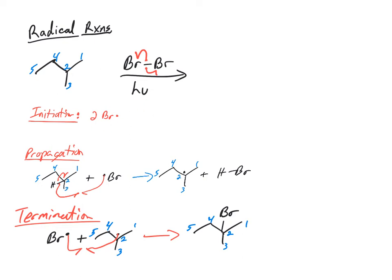So three steps. Initiation: form the radicals, need some energy to do that, break the weaker bond. Propagation: abstract a hydrogen that gives you the most stable radical. Same rules apply for radicals as do for carbocations. This is electron deficient, so we're going to make the most stable radical possible.